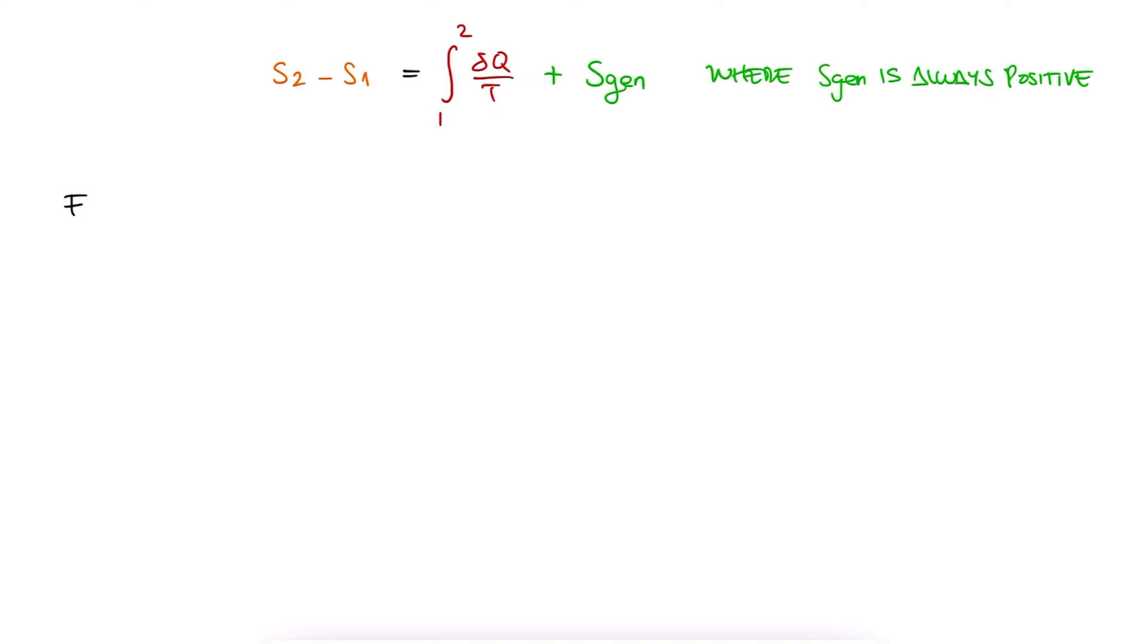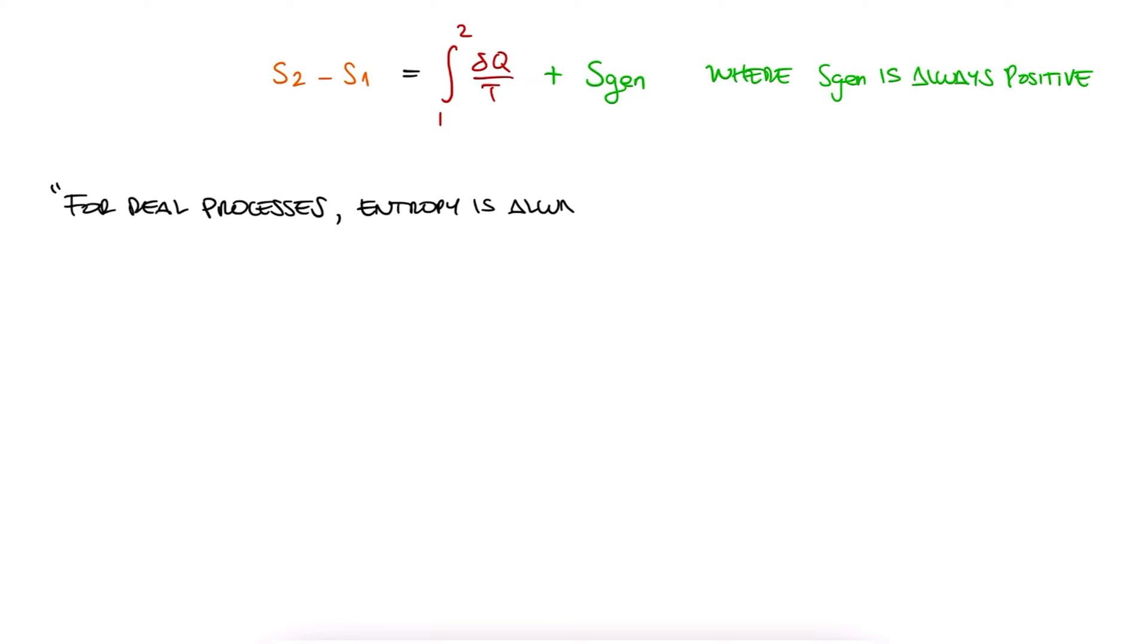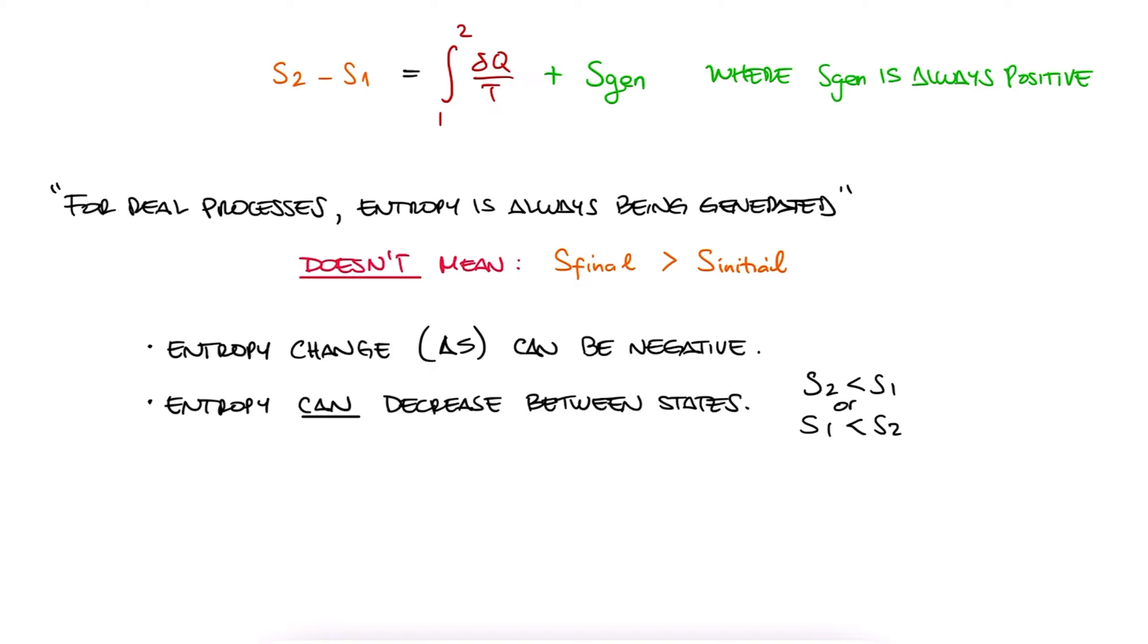Basically, that to make this inequality an equation, we would be adding an entropy generation term that is always positive. So, this is very important to understand. In real processes, there is always entropy generation, but that doesn't mean that from state 1 to state 2, the entropy is always increasing. We can still have the entropy change be negative. We can have entropy decrease between states. We have no problem with that. It just means that for a real process, there is always entropy generation, and that entropy generation term is always positive. There are simple examples that we can use to prove that when comparing irreversible versus reversible processes, the difference is the entropy generation, and that that generation is always positive. But we'll elaborate more on it when we cover exergy. More on that in a later lecture.